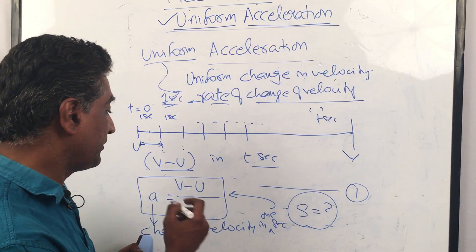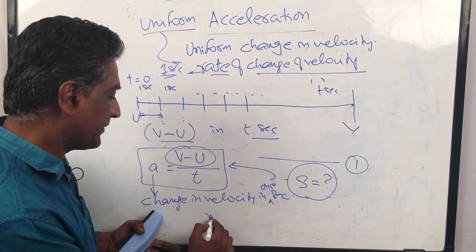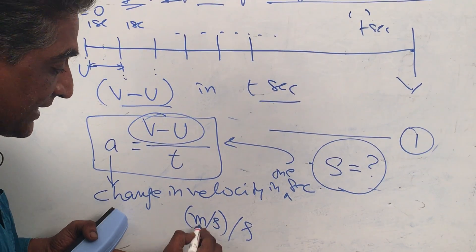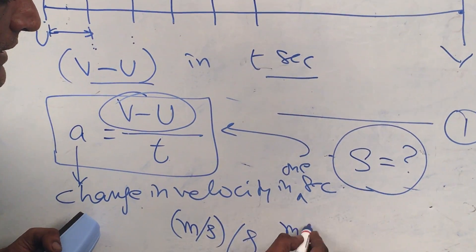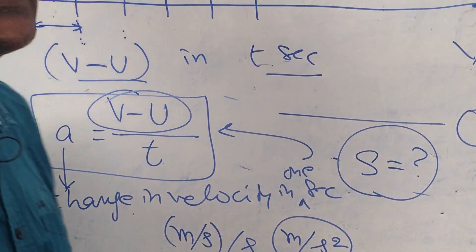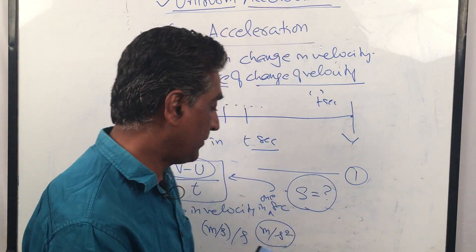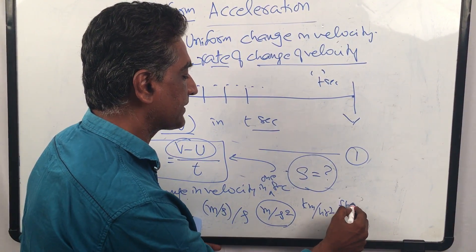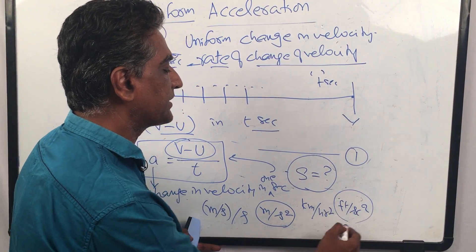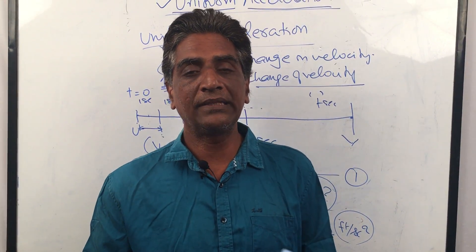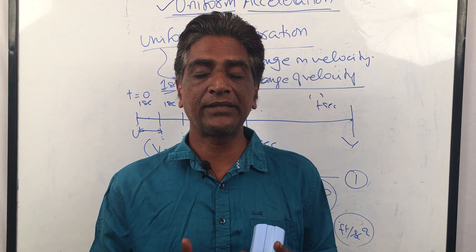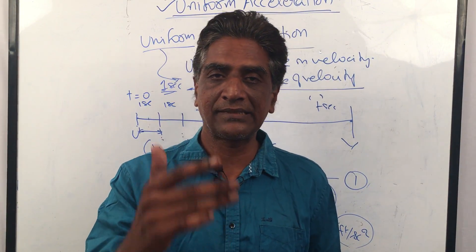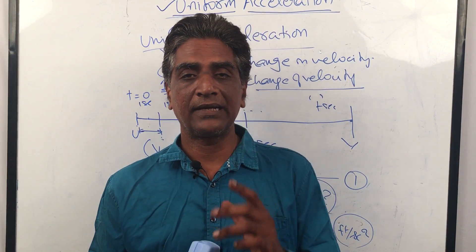What are the units of acceleration? This is units of velocity — meters per second — change in velocity per second. So it is meters per second per second, which you can also write as meters per second squared. Alternatively, kilometers per hour squared or feet per second squared — these are the units of acceleration. That completes uniform acceleration and the first kinematic equation. The next two kinematic equations we will do in the next lesson. Thank you — this is Narendra Kumar from Narendra Academy.